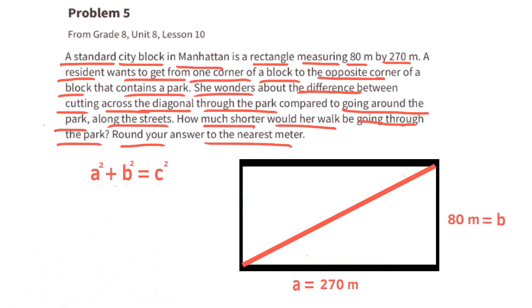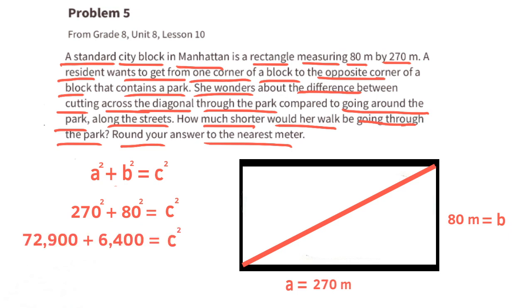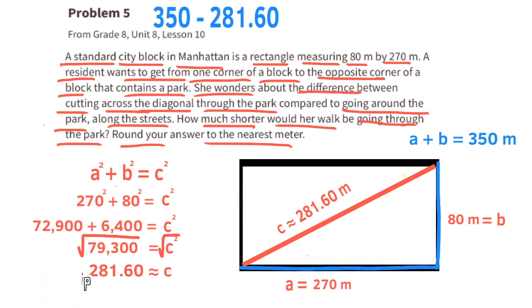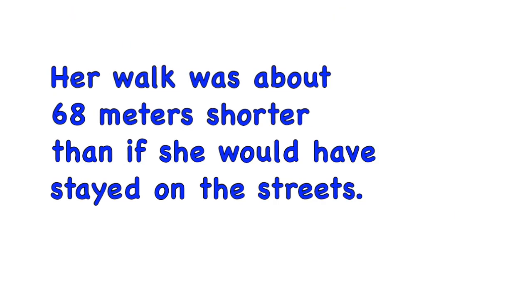Using a squared plus b squared equals c squared: 270 squared plus 80 squared equals c squared. That gives 72,900 plus 6,400 equals c squared, so c squared equals 79,300. The square root of 79,300 is approximately 281.6 meters. If she stayed on the streets that would be 350 meters. So 350 minus 281.6 equals 68.4 meters. To the nearest meter, her walk was about 68 meters shorter.